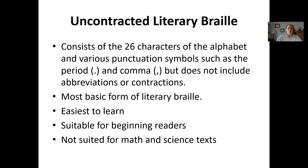The first braille code we'd like to do a quick refresher on is uncontracted literary braille. This consists of the 26 alphabet characters and punctuation symbols — it's really the most basic form of braille. There are no contractions in uncontracted literary braille. It's the easiest to learn, suitable for beginning readers, and it's not suitable for math or science texts.